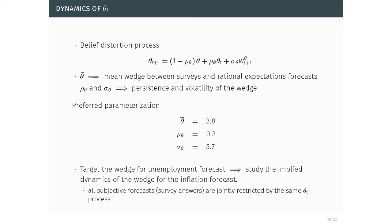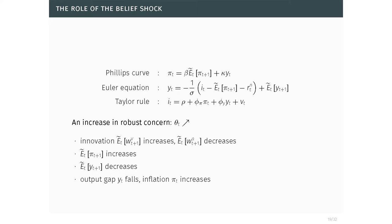We parameterize the model almost as in Gali — we needed to increase risk aversion so that the model generates sufficient fluctuations in VX, giving the right magnitude of belief distortions on the unemployment question. We postulate the belief distortion process and use simulated method of moments to estimate the parameters: theta-bar (the overall level), plus the persistence and volatility of the theta process. We then invert the dynamics to recover the process for theta.